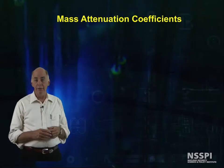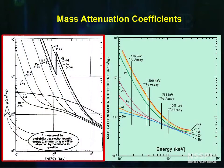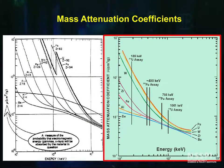Graphs of the mass attenuation coefficients are shown here. The second graph gives the mass attenuation coefficients for gamma energies of interest for those of us monitoring special nuclear materials, as a function of shielding material.